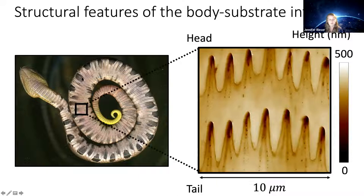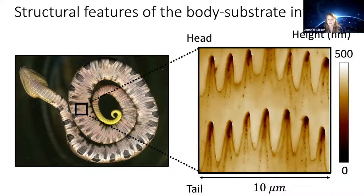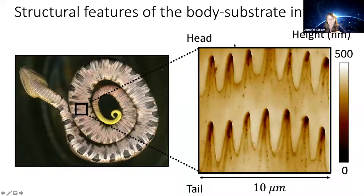We took AFM measurements. This is a 10-micron by 10-micron scan with the head at the top and the tail towards the bottom. What we see in many different animals is head-to-tail oriented spikes pointing along the body — several hundred nanometers tall, projecting out of the body pointing towards the tail.